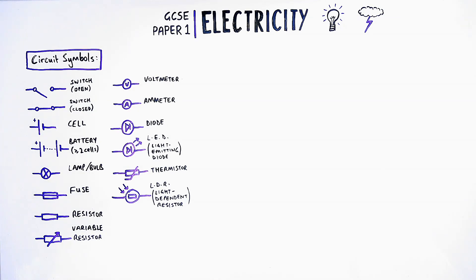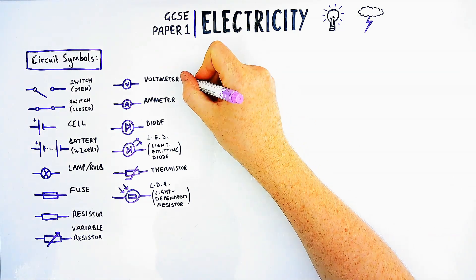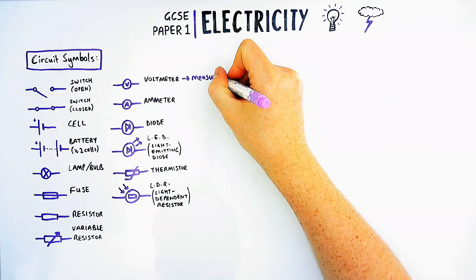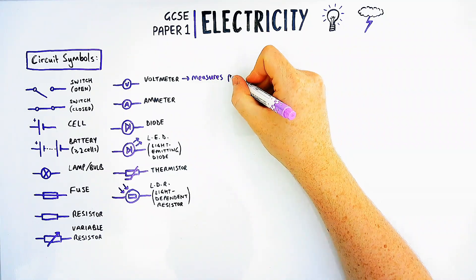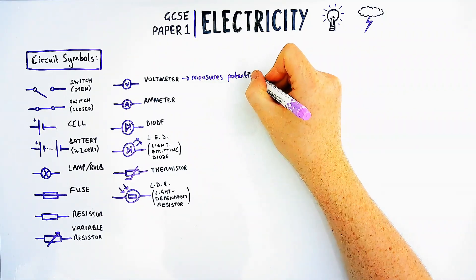GCSE students can often find the topic of electricity quite tricky, so this is going to tell you everything you need to know to prepare for GCSE physics paper one. We're going to start with the basics - you need to know all these different circuit symbols. There are tricky ones towards the end we're going to cover what they do, but you should be familiar with switches open and closed and the rest down the left hand side.